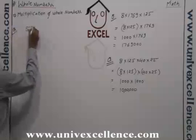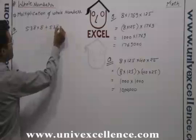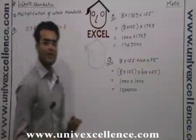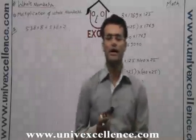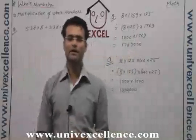Now it's a very important question: 538 into 8 plus 538 into 2. Now you see that there is nothing like making a zero.